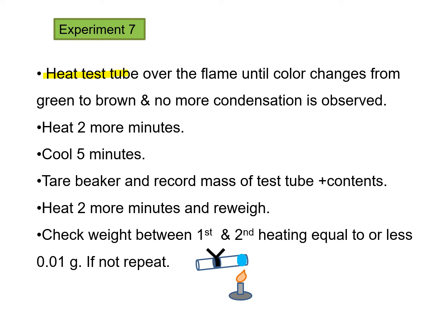Heat your test tube over a Bunsen burner flame, holding the test tube in a horizontal position. Heat it until the color, which should be green, changes to brown — this tells us the water is being released. Once it goes completely from green to brown, all of the water has been released. You'll see condensation forming on the test tube and steam coming out. After the color change, continue heating for two more minutes to ensure all water is released.